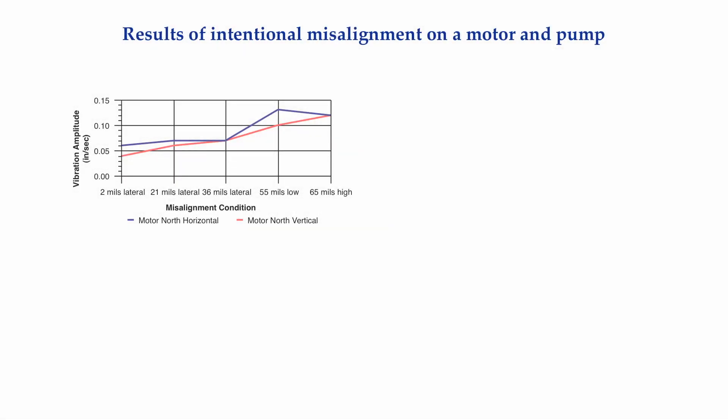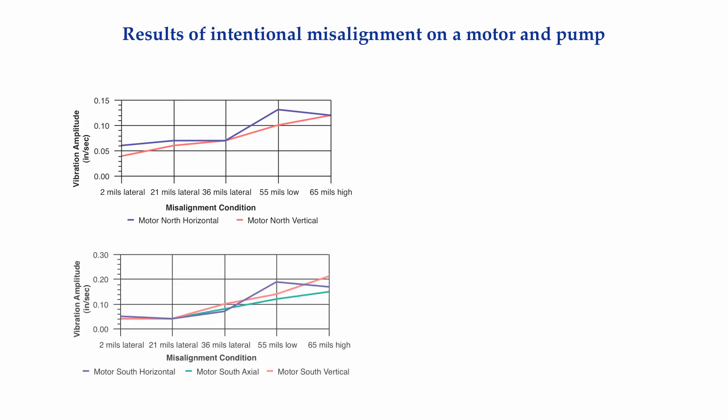Starting at the coupling or inboard end of the motor, the overall vibration in the horizontal and vertical directions started out at around 0.05 inches per second and remained pretty much at that amplitude level for both the 21 and 36 mils lateral misalignments. There was an increase in amplitude when the motor was 55 mils low, but then, surprisingly, at the worst misalignment condition where the motor was high by 65 mils, the vibration in the horizontal direction decreased slightly. At the outboard end of the motor, a similar trend occurred — overall vibration levels didn't increase until the motor was 55 mils low. For the test when the motor was high by 65 mils, the vertical and axial vibration increased slightly, but for some reason the horizontal vibration decreased.